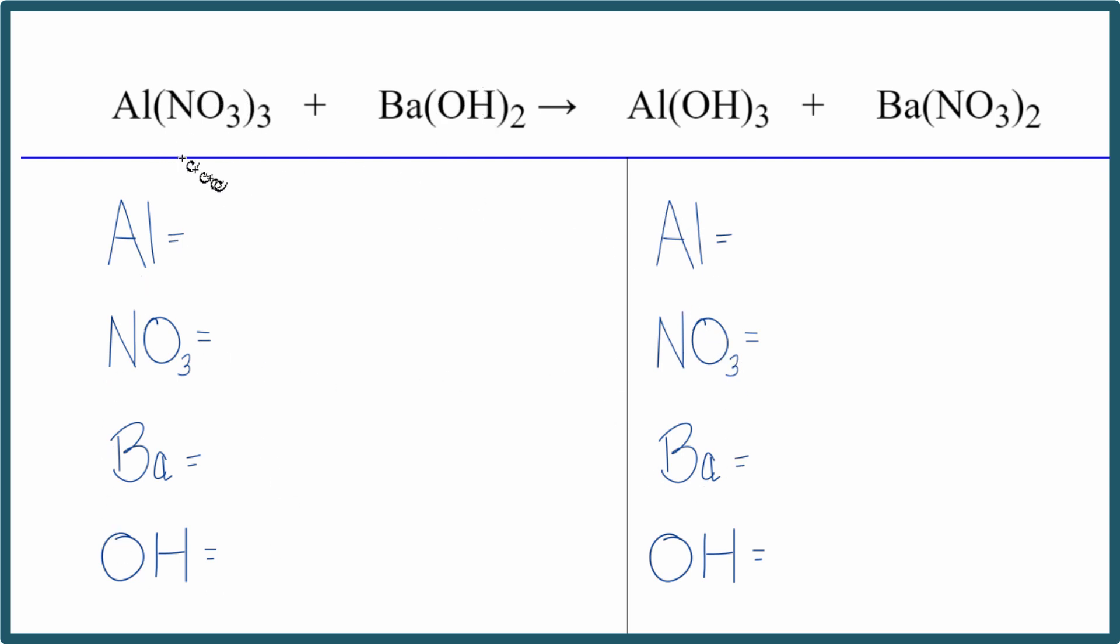We need to recognize this is a double displacement reaction. The aluminum and the barium are switching places. So we end up with aluminum hydroxide, and the barium goes with the nitrate to give us barium nitrate. Double displacement.